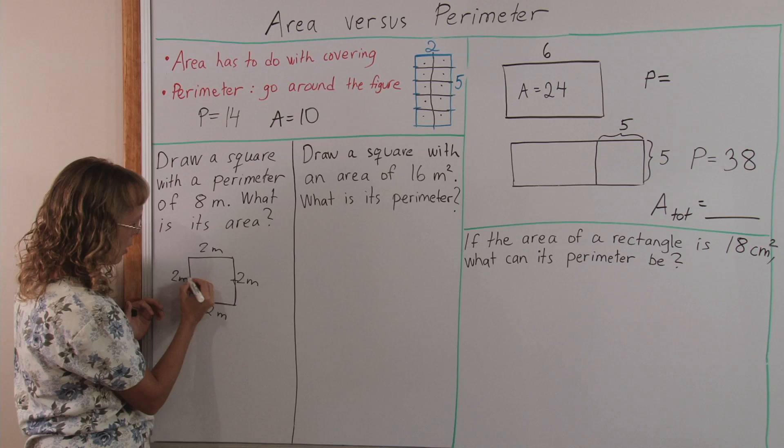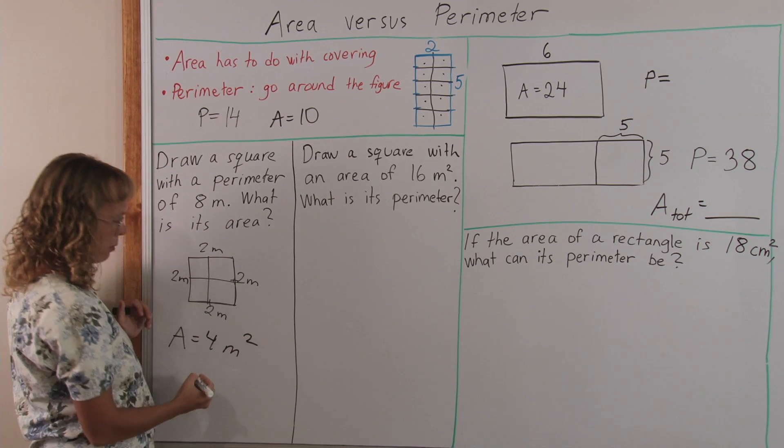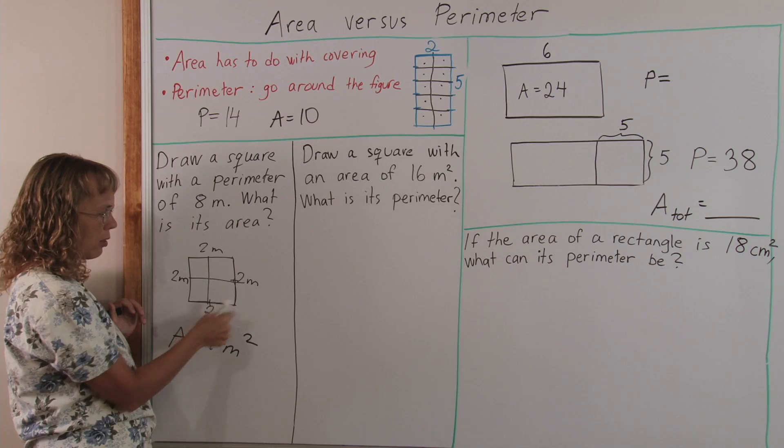Two, one, two, and one, two, the area will be four square meters. We need to put the unit here since we had the unit here too.